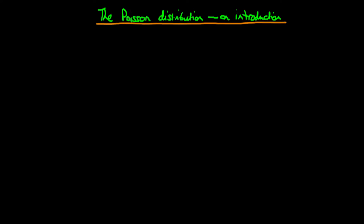In this video I want to provide an introduction to the Poisson distribution. We're going to start off by defining the mathematical formula behind the Poisson distribution, then talk about the circumstances under which it is appropriate to use a Poisson distribution, and provide some example situations where it is adequate to model a situation using a Poisson distribution.